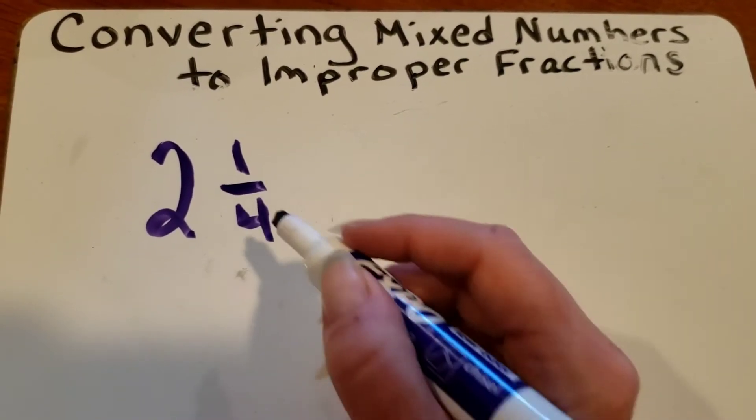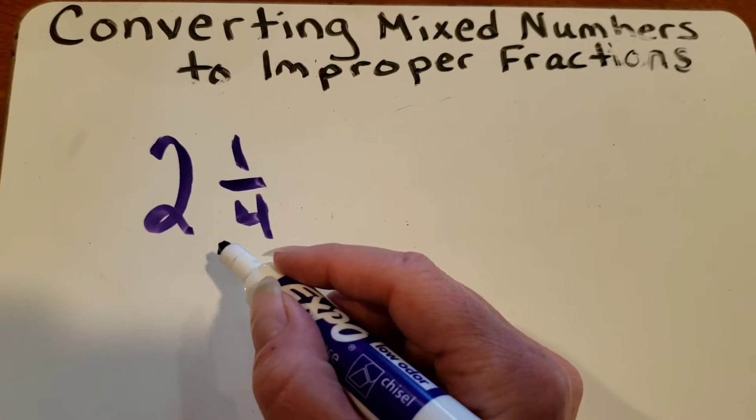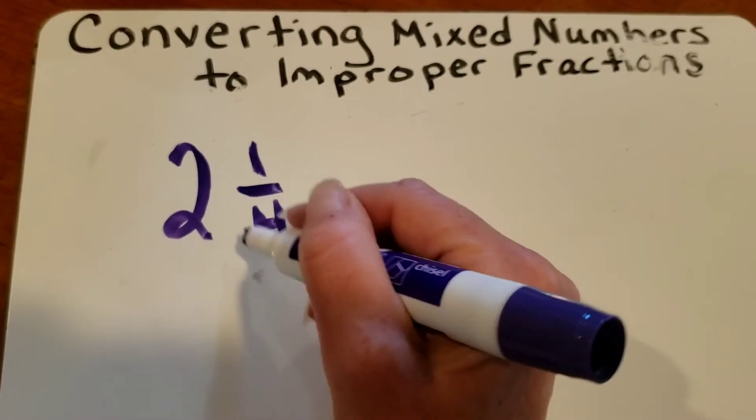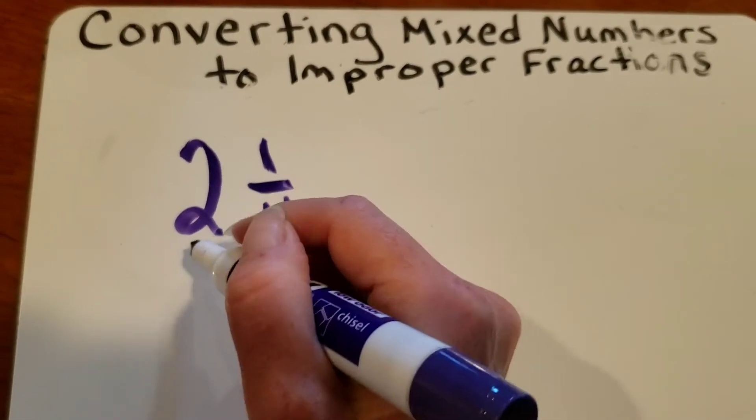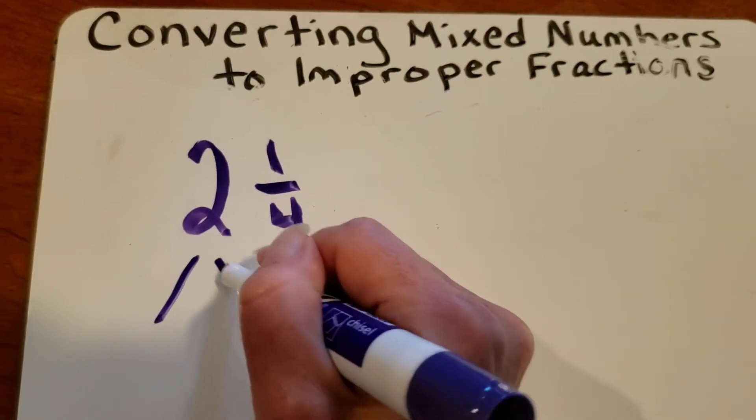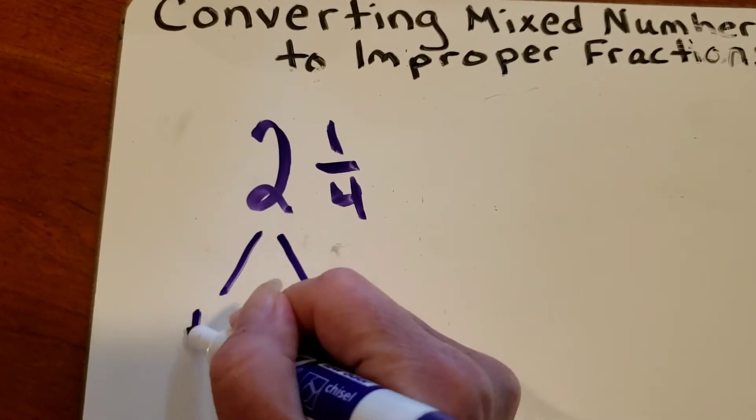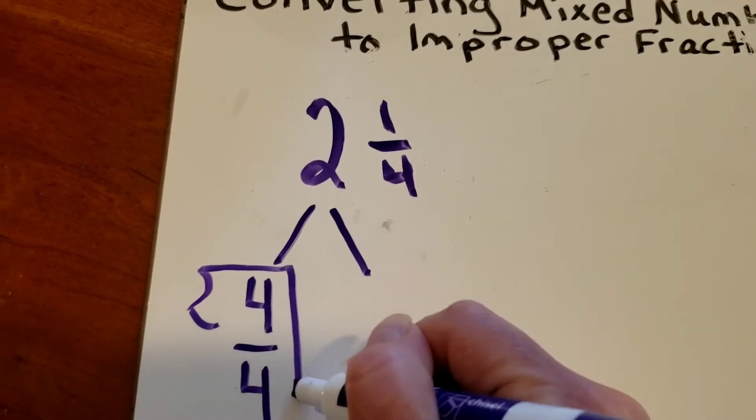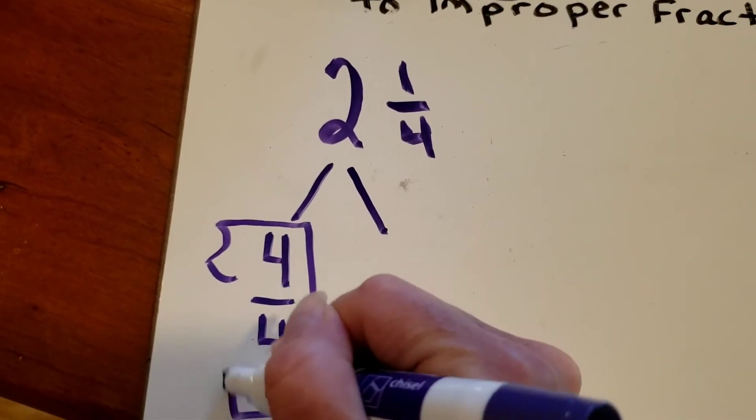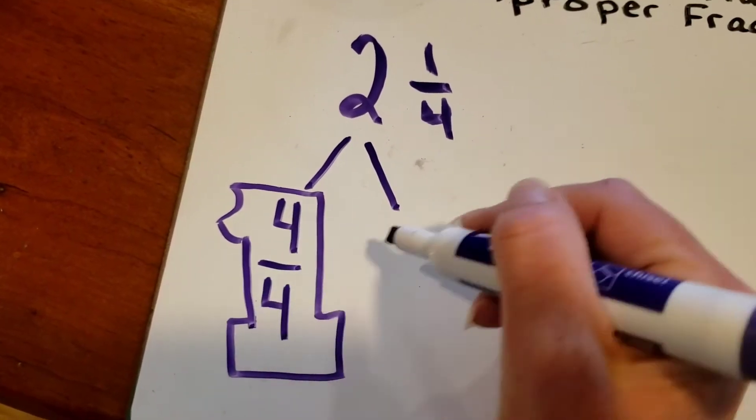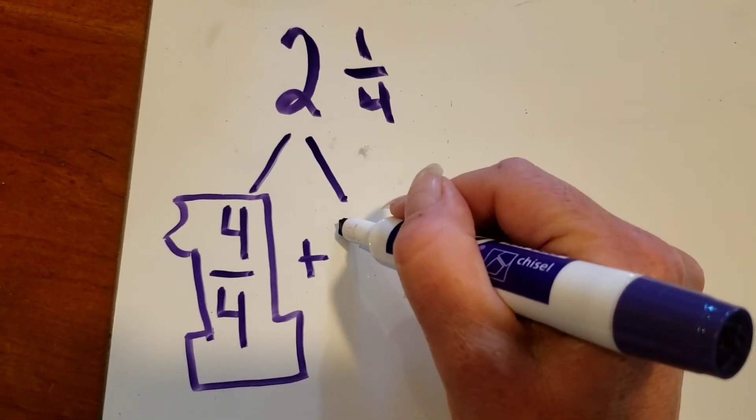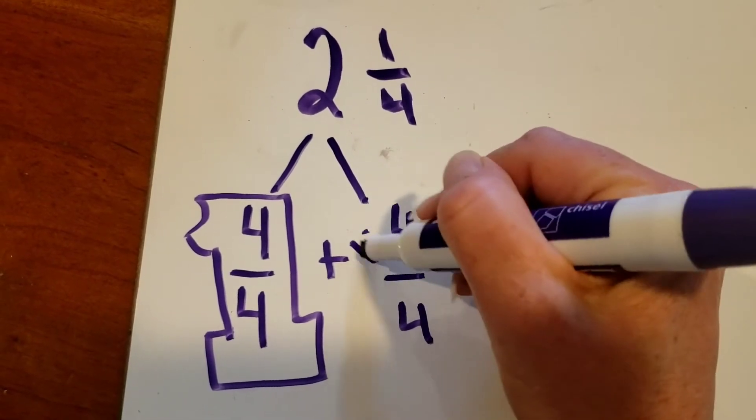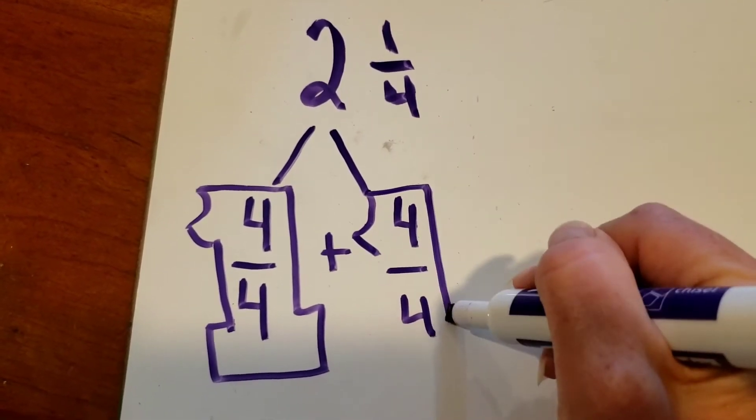One way is by using what we know about whole numbers and fractions. We know that if our denominator is four, then two whole is equal to four fourths. And I like to make a giant one around it to remind myself that that is actually the same as one whole. Plus four fourths again, that is equal to one whole.